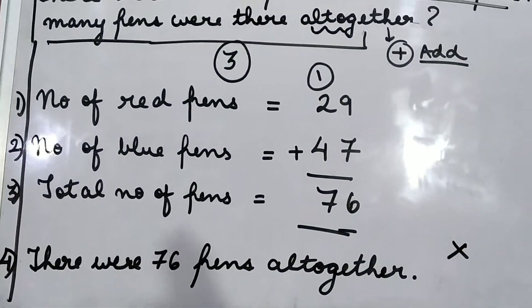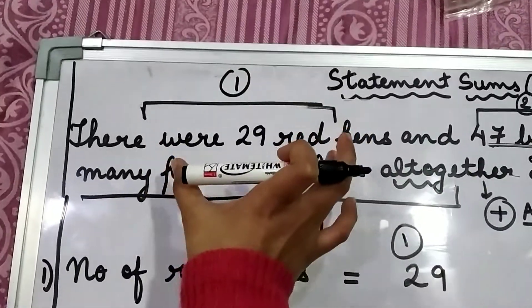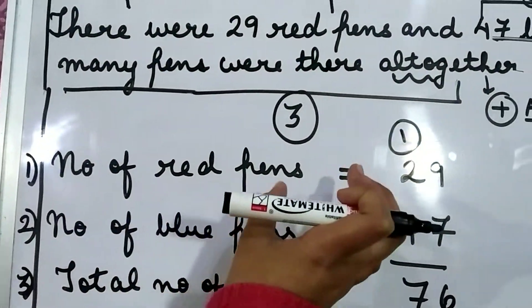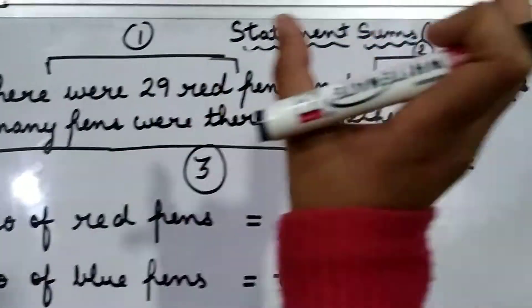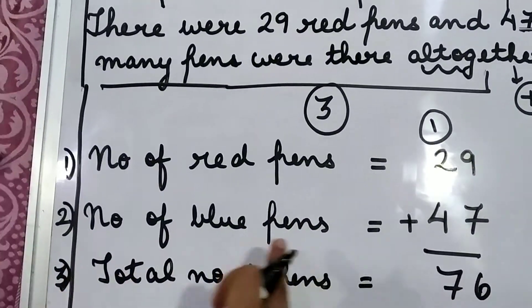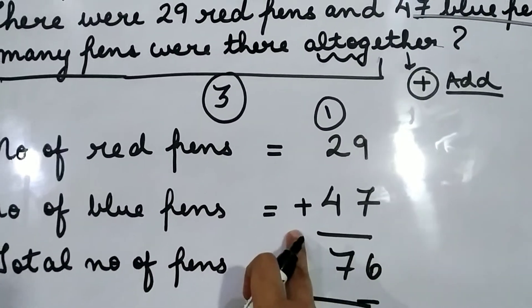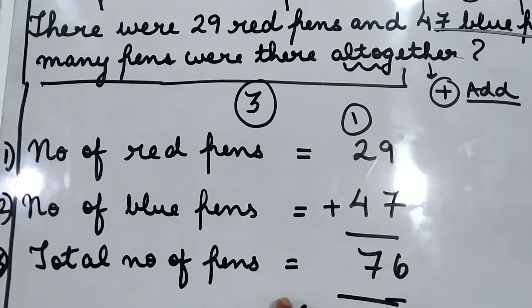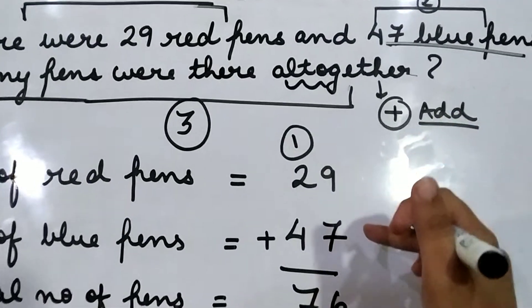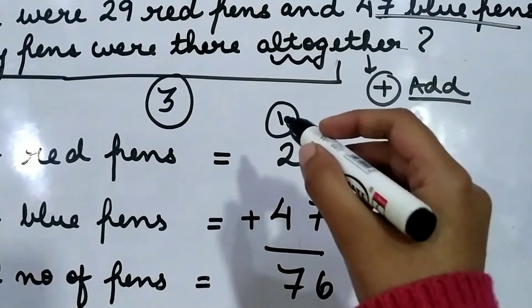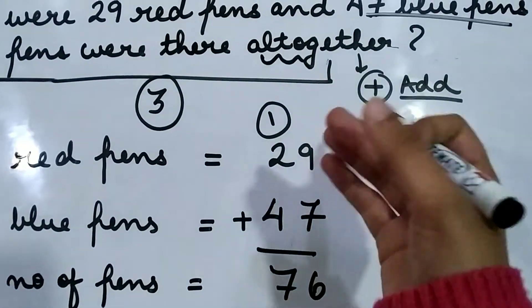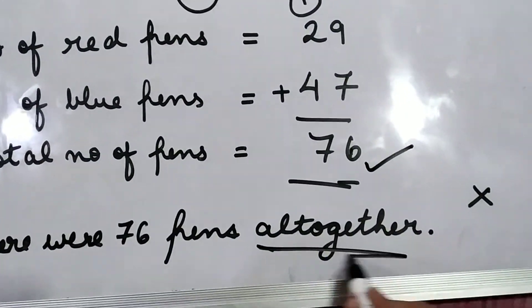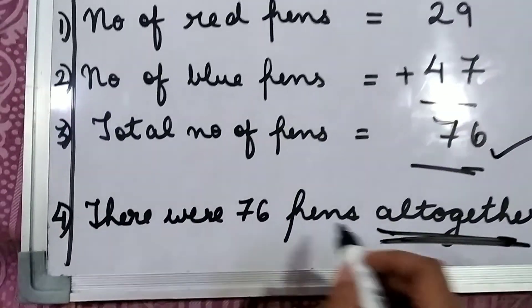This is how you have to solve the statement sums. Read the first part of the question: there were 29 red pens — straight away write number of red pens equals 29. Second part says 47 blue pens, so number of blue pens equals 47. You have to put the plus symbol also. Then the last part: how many pens were there all together? Total number of pens equals 9 plus 7 is 16, then 2 plus 3 — 4, 5, 6, 7 — 76 will be the answer. There were 76 pens all together. All together needs to be written in the fourth part.